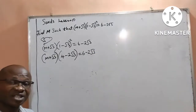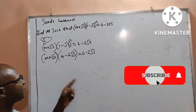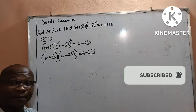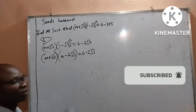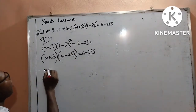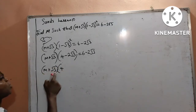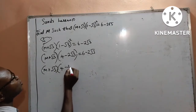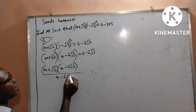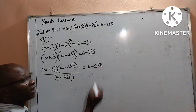Now, looking at this question, our interest is to get m. I will divide both sides by 4 minus 2 root 3, in order to get away with this bracket. Therefore, I will now have m plus root 3 into 4 minus 2 root 3, everything divided by 4 minus 2 root 3. Then by the right-hand side, I will still have 6 minus 2 root 3, also divided by 4 minus 2 root 3.